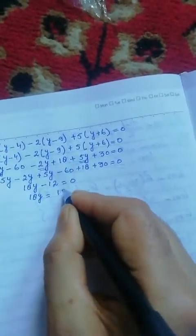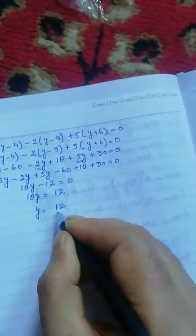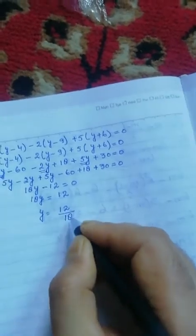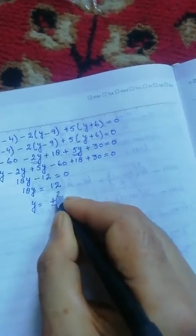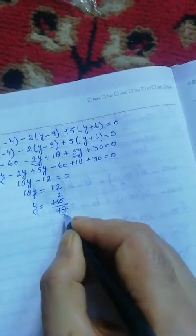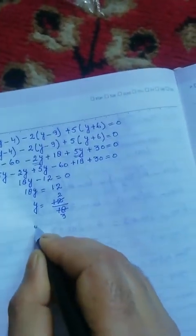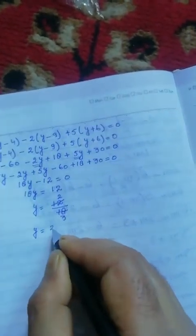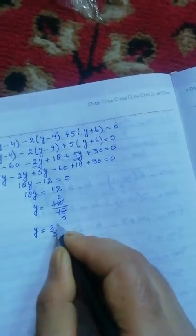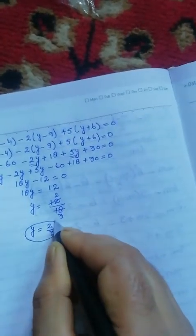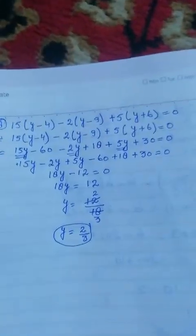So 18y is equal to 12, therefore y is equal to 12 upon 18, which is 2 upon 3. So y equals 2/3, this is the answer of this question.